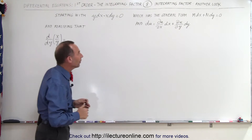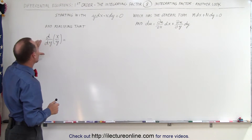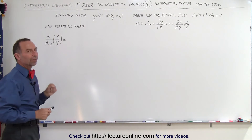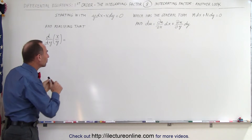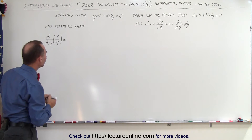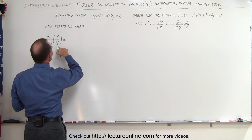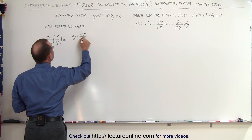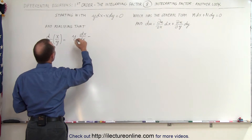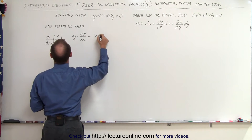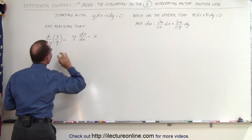Now let's say we realize that if we take the differential with respect to y of the quantity x divided by y, we get something related to our original equation — that's why we do this. So let's compute it: we get the denominator y times the derivative of the numerator dx, minus the numerator x times the derivative of the denominator.